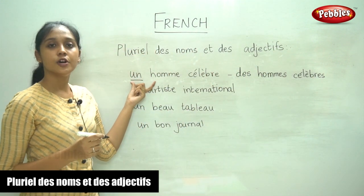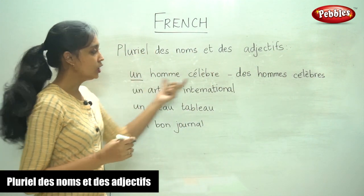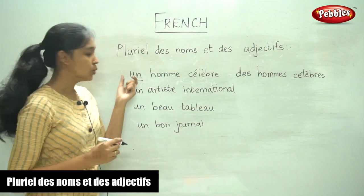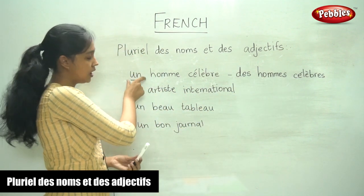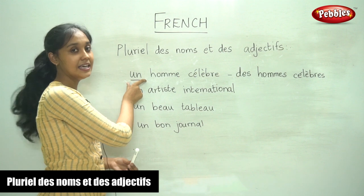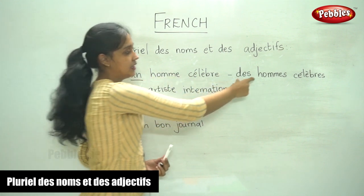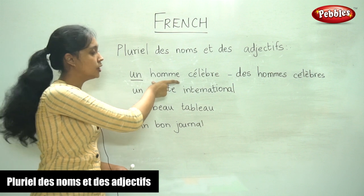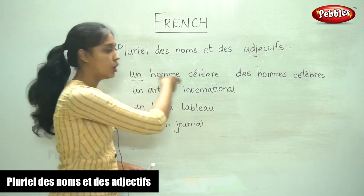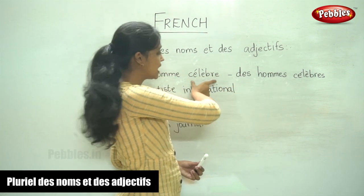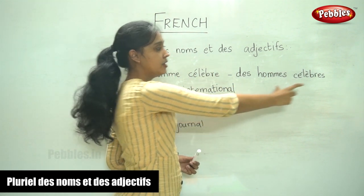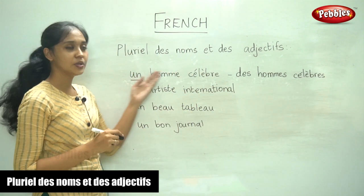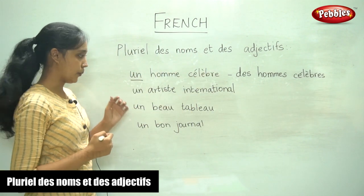So from singular we have converted it into plural, word by word. 'Un' becomes 'des', the plural for 'nom' is 'noms', and 'célèbre' becomes 'célèbres'. So: des noms célèbres. This is how we write it in the plural form.